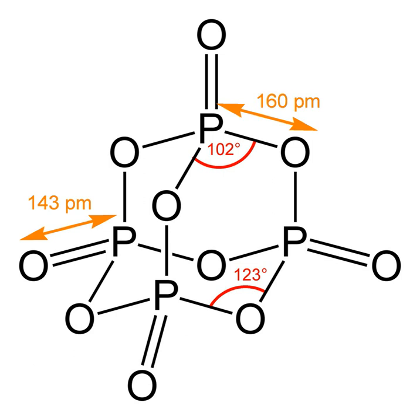Phosphorus pentoxide crystallizes in at least four forms or polymorphs. The most familiar one, a metastable form shown in the figure, comprises molecules of P4O10. Weak van der Waals forces hold these molecules together in a hexagonal lattice.